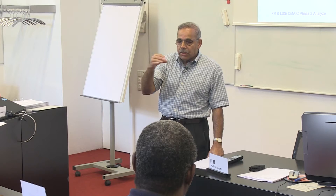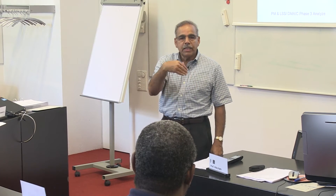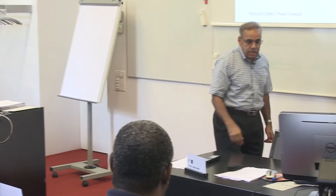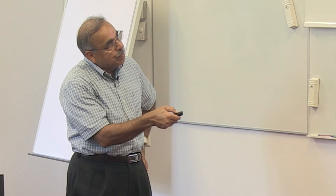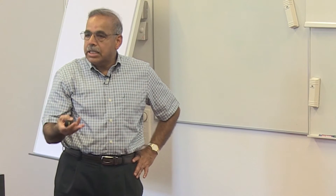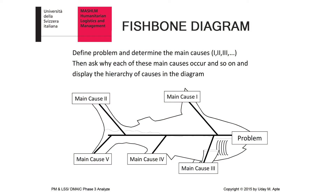Starting with the problem, you ask 'why' five times until you trace to the root of the problem, then you attack that root cause and correspondingly solve the problem. For example, you start with a problem and there may be many causes — main cause 1, 2, 3, 4, 5, etc.